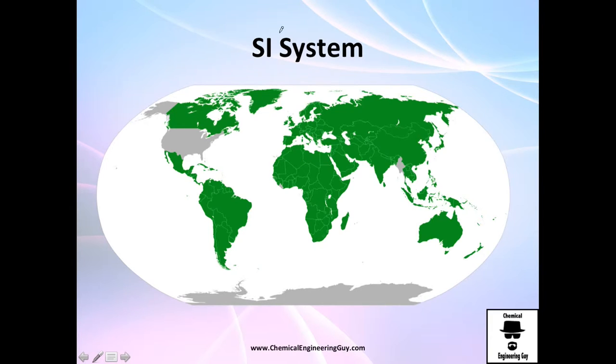Let me just give you a little insight of who is using actually the international system. It's everything green. Just USA is not using it, I think this is Liberia, and Myanmar or Burma, and of course Antarctica because it's technically not a country.